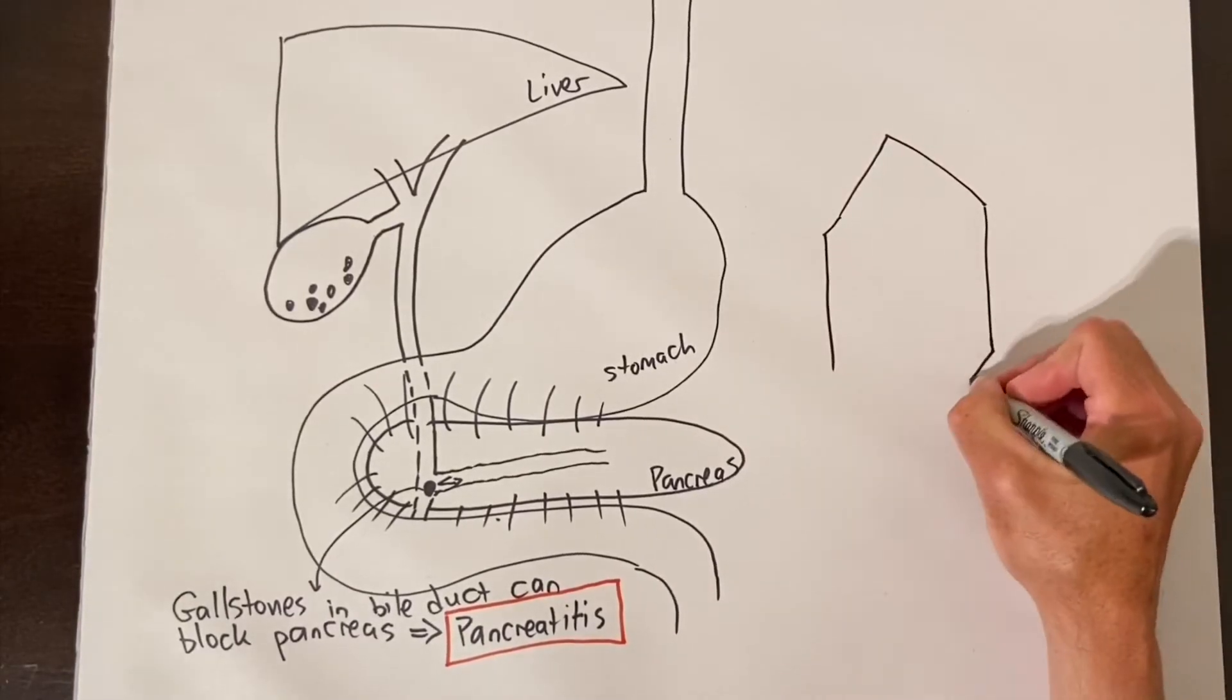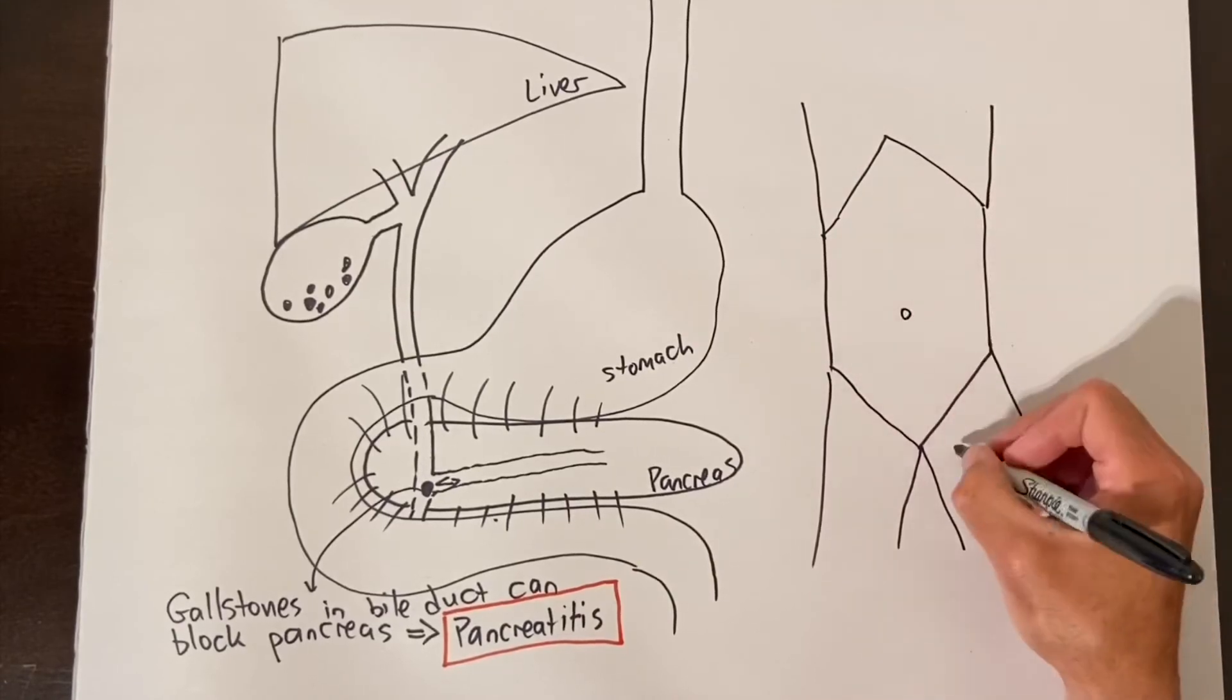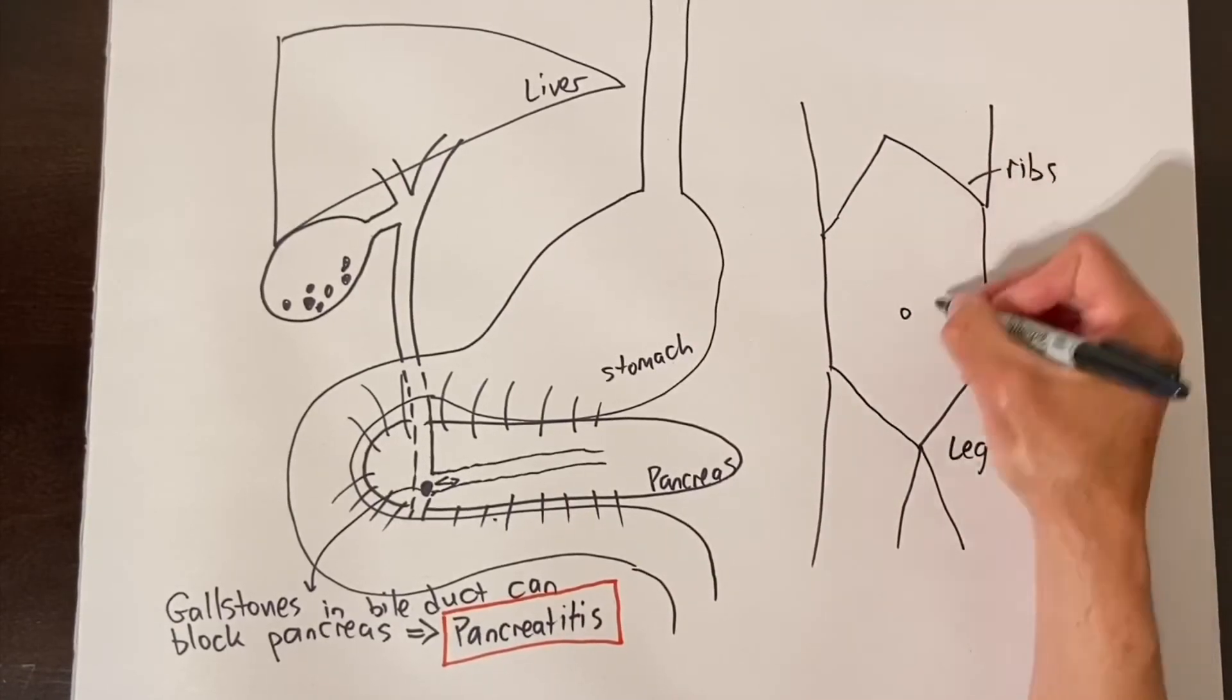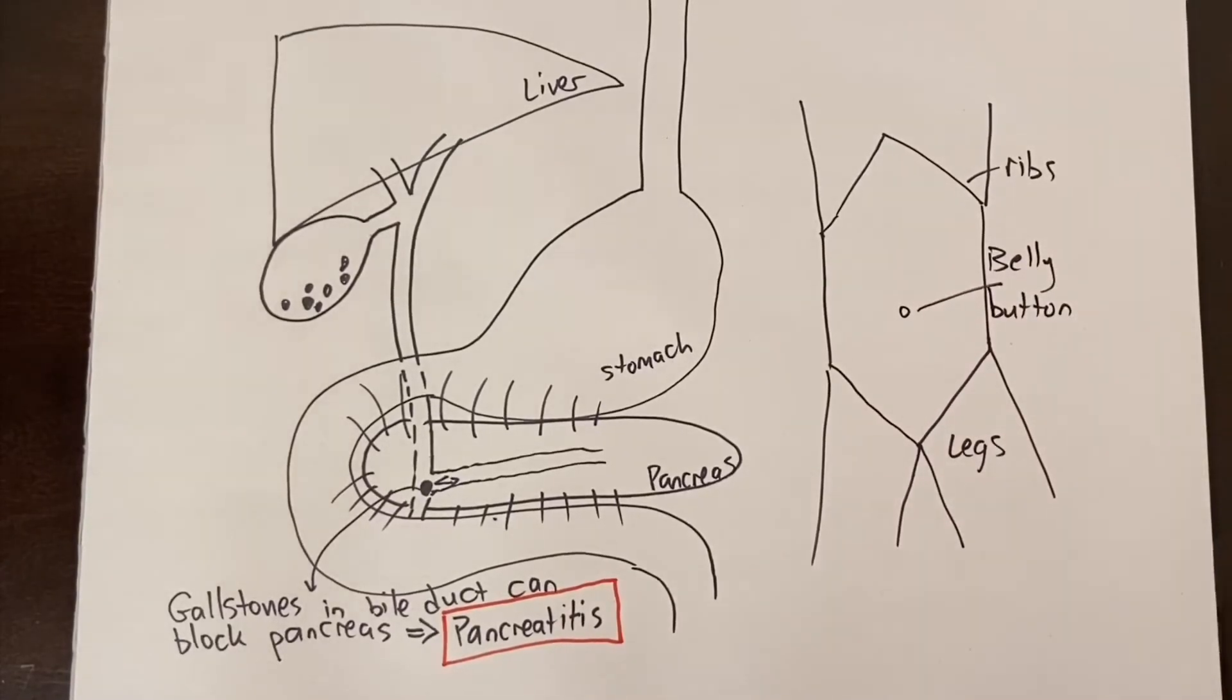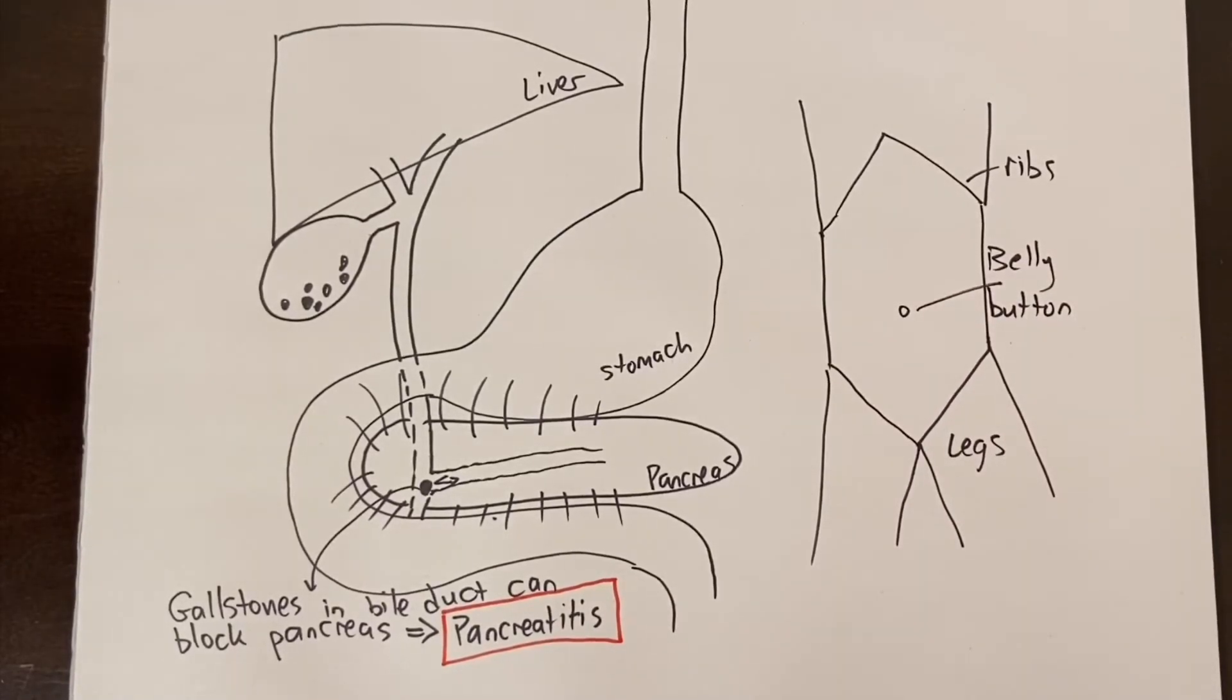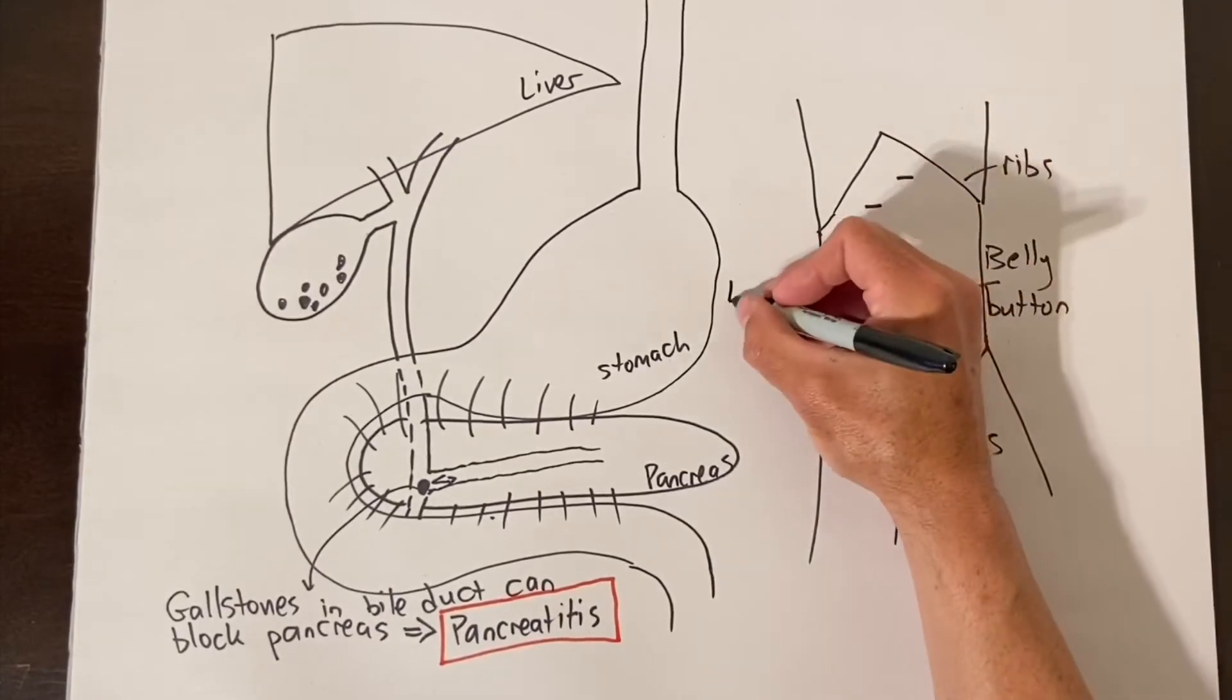Briefly let's talk about gallbladder removal surgery itself. The term for removing the gallbladder is called cholecystectomy. The vast majority of cholecystectomy surgeries are done through small holes using laparoscopic equipment and so these are called laparoscopic cholecystectomy surgeries.